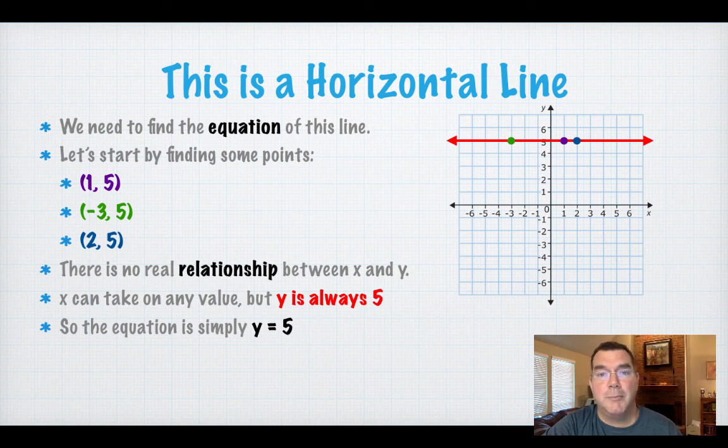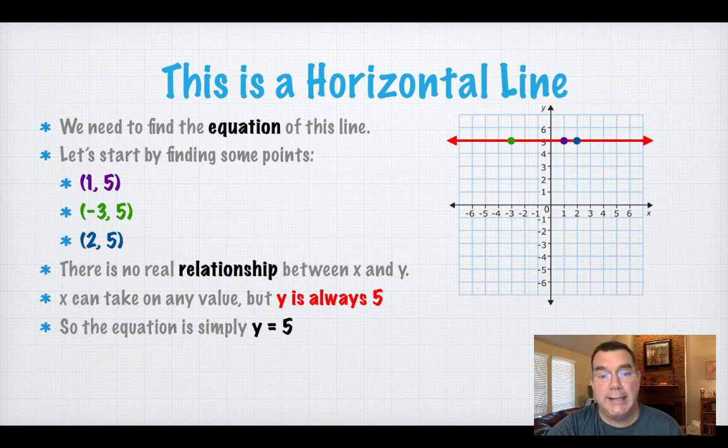So the equation for that line is just written as y equals 5. You don't include any kind of mention of x in that equation because it doesn't matter. Y is always 5 no matter what x is.